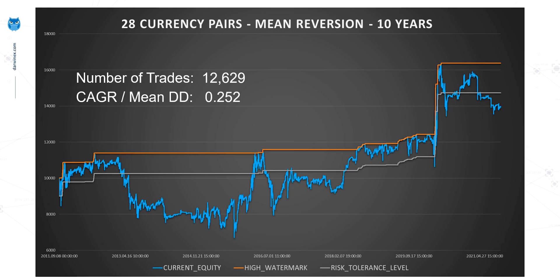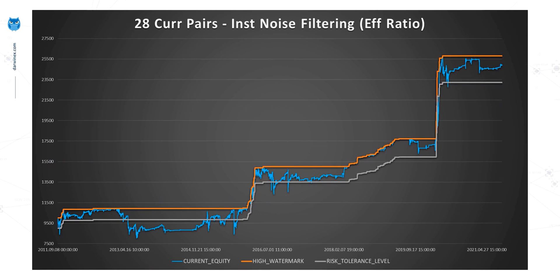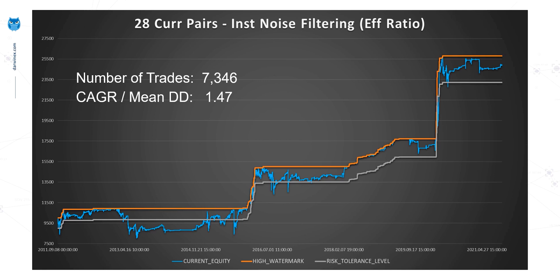Now let's look at the effect on the equity curve when, instead of allowing all trades to open at all times, we measure the noise just before the trade is opened and decide whether it will be allowed or disallowed. In terms of metrics, we've reduced the number of trades from 12,500 to just under 7,500. Just over 5,000 of those trades were not allowed to open because the noise conditions were not suitable at that time. Visually, this has had a positive impact on the equity curve, and measuring more precisely with our performance metric, it has increased significantly from 0.25 up to 1.47.